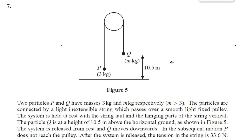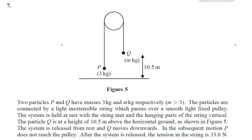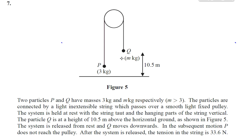Now for question number seven from January 2017 IAL M1 paper, a question about connected particles and pulleys. Two particles P and Q have masses 3 kg and m kg respectively. We can see that there's going to be their weight acting downwards. This has the weight mg, and this has the weight 3g.